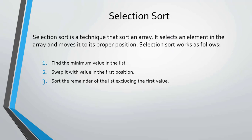Selection sort is a technique that sorts an array. It selects an element in the array and moves it to its proper position. Selection sort works as follows: First step — find the minimum value in the list. Second step — swap it with the value in the first position. Third step — sort the remainder of the list excluding the first value.